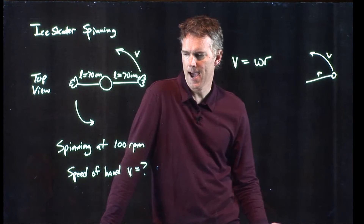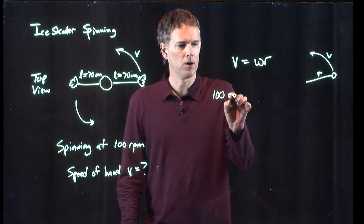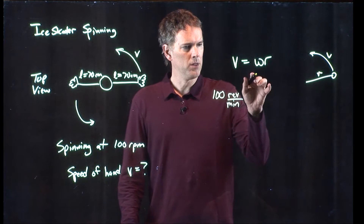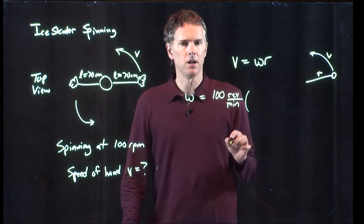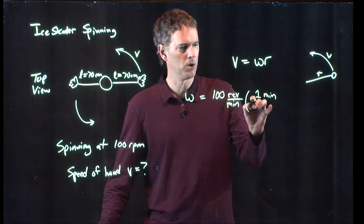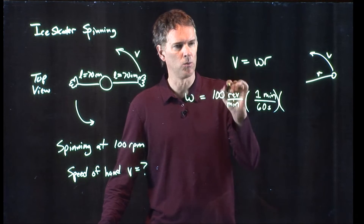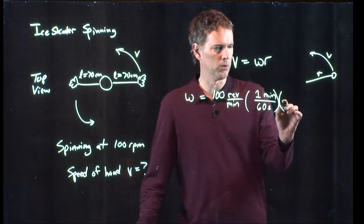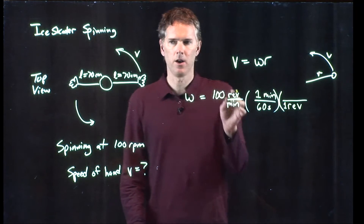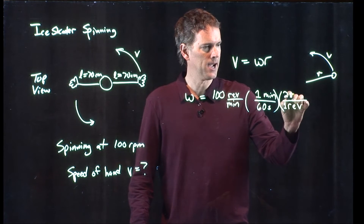We don't really have Omega yet, but we do know that we have 100 RPMs — 100 revolutions per minute. We know that Omega has to be in radians per second. So first, we've got to get rid of the minutes. We multiply by one: put one minute up there, 60 seconds down there. Then we've got to get rid of the revs — revs is a unitless quantity, but we need to convert it. One revolution all the way around is 2 pi radians.